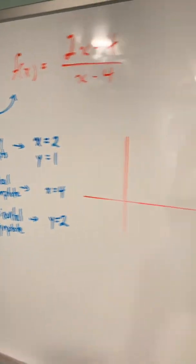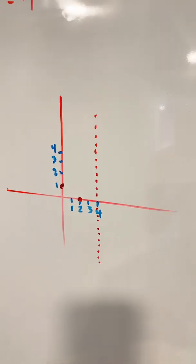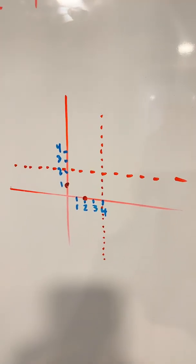Next, we'll take all this information and we'll stick it on a nice little pair of axes. We have our x-intercept at 2, our y-intercept at 1, we have a vertical asymptote at x equals 4, and a horizontal asymptote at y equals 2.